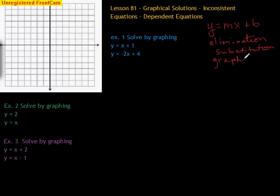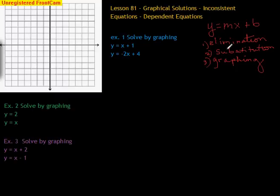So there are three ways you can solve a system of equations: by elimination, substitution, or graphing. Today we're going to do the third one. Now that you know how to graph fairly well, we're going to do it by graphing. This is what your problems are going to look like — solve by graphing — and you can see we have two equations.